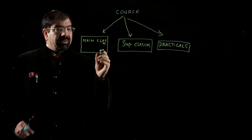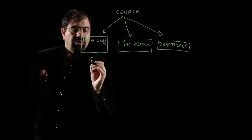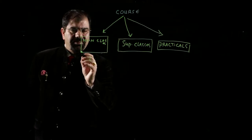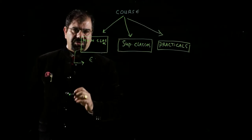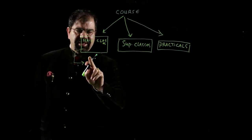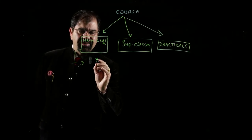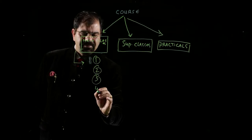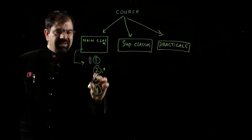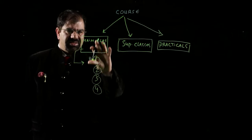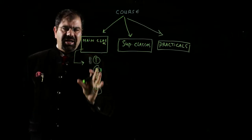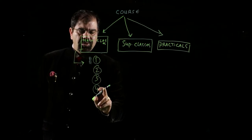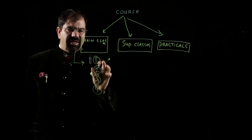Each course will be having main classes. In main classes, we will be having class videos — class number one, class number two, class number three, class number four. So there will be four to seven classes in one main class. In this main class, we will be having four, five, or six classes.